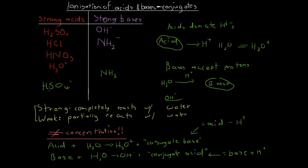Similarly, if we treat HSO4⁻ — the hydrogen sulfate ion — as a base, then its conjugate acid is sulfuric acid, H2SO4, because we add one H+ to HSO4⁻ to get H2SO4. We'll do an example in another video dealing with strong acids, bases, and their conjugates.